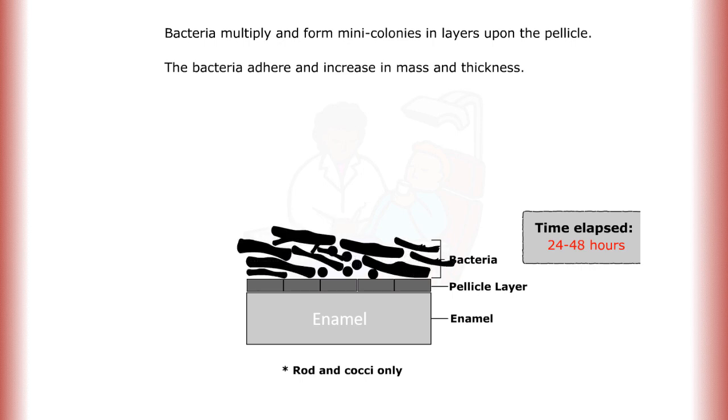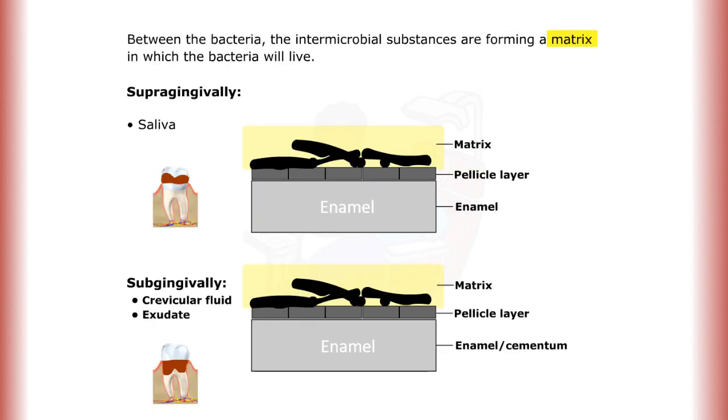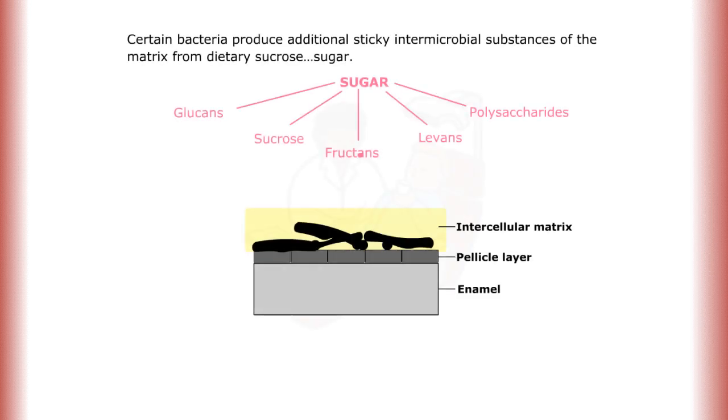Between the bacteria, the intermicrobial substances are forming a matrix in which the bacteria will live. Supragingivally and subgingivally, certain bacteria produce additional sticky intermicrobial substances of the matrix from dietary sucrose or sugar.